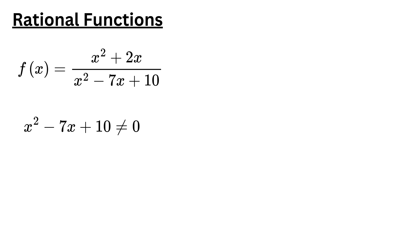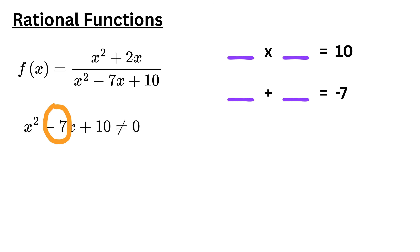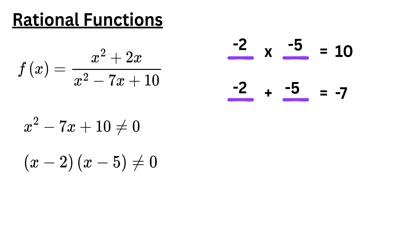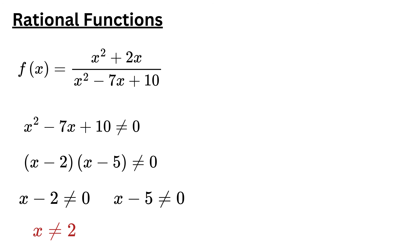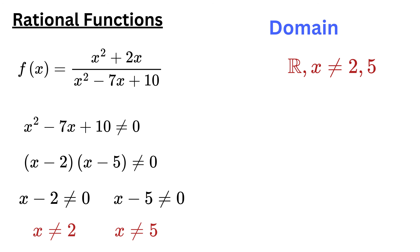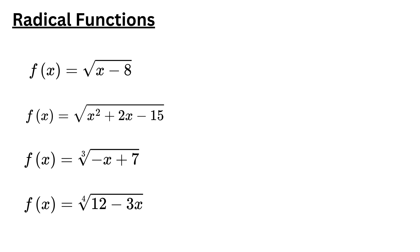For this function to be defined, the trinomial must not be equal to zero. To solve this inequality, first factor the trinomial. Find two numbers that multiply to give 10 and add up to give negative 7. These numbers are minus 2 and minus 5. So when they are factored, the expression becomes x minus 2 times x minus 5. Now set each factor not equal to zero. This shows that x cannot equal 2 and x cannot equal 5. Therefore, the domain of this rational function is all real numbers except 2 and 5, written in interval notation as negative infinity to 2, union 2 to 5, union 5 to positive infinity.